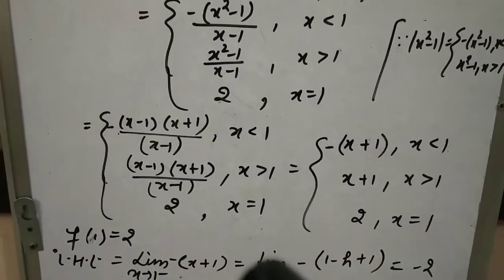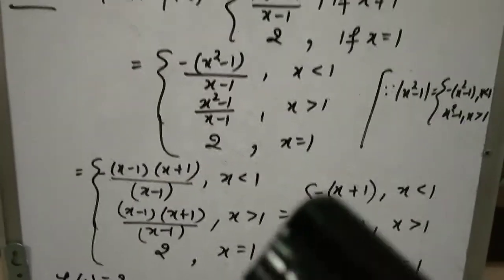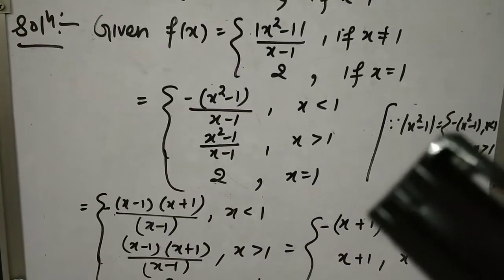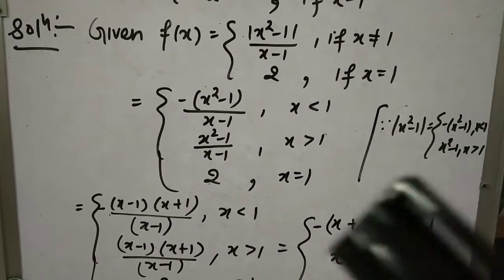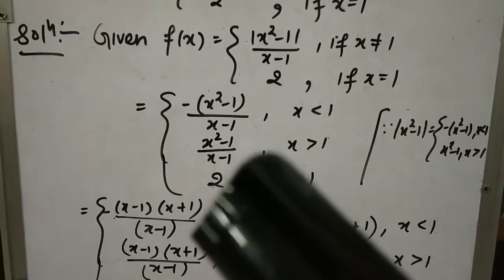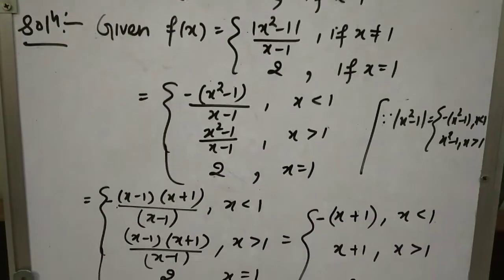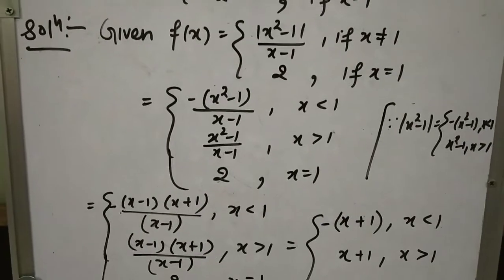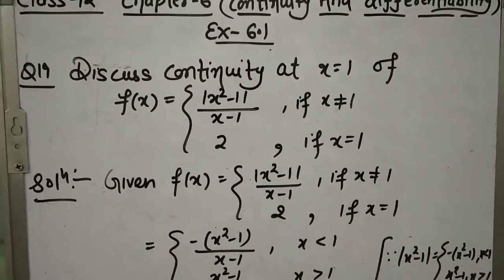So the function is discontinuous at x = 1। ध्यान रखना: modulus function को हम दो parts में break करेंगे — एक negative values के लिए और एक positive values के लिए। Simplify करके continuity check करेंगे। इस तरह से question number 19 तक solve कर लीजिएगा। Thank you।